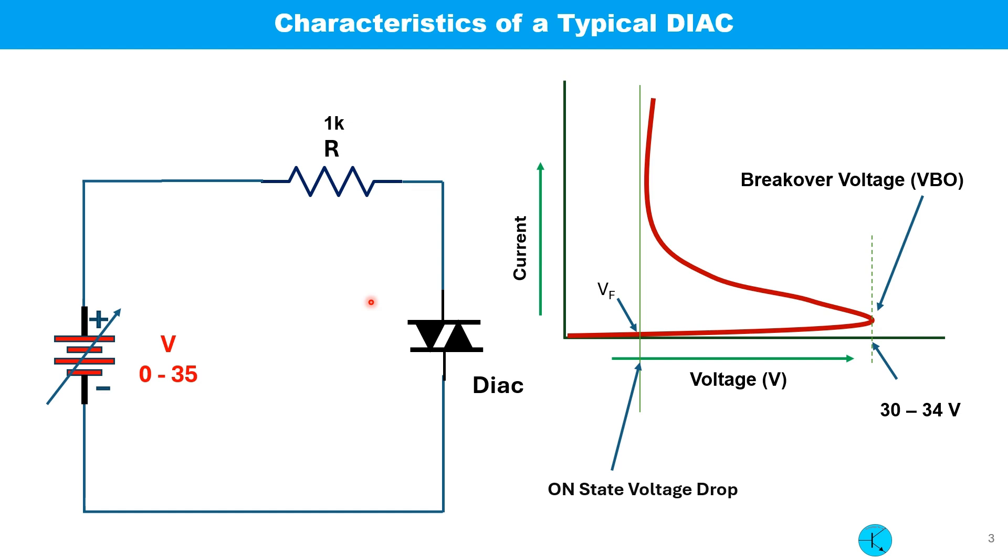We can easily determine the characteristics of a DIAC using a variable power supply 0 to 35V. And we have to connect a resistor to protect the device. It could be 1 kilo ohm. Initially, at low voltage, there will be very little current, and if we measure the voltage across the DIAC, we can see that whenever the breakover voltage is reached, suddenly the current goes high and the voltage goes down. The current is only limited by the resistor connected in series, that is 1 kilo ohm.